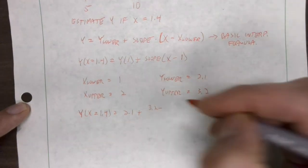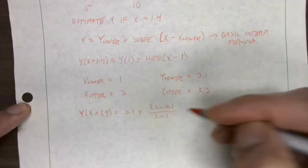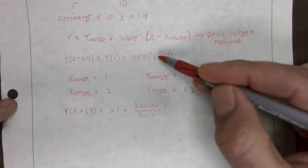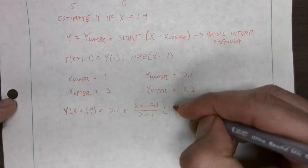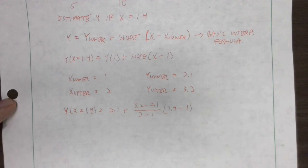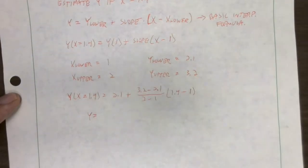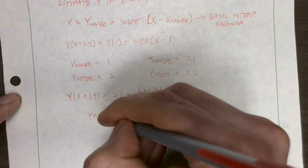That's (3.2 - 2.1) over (2 - 1). My x value here is 1.4 and my starting point of the interval is x equals 1. So if I plug that in, I'm going to get y equals 2.54.